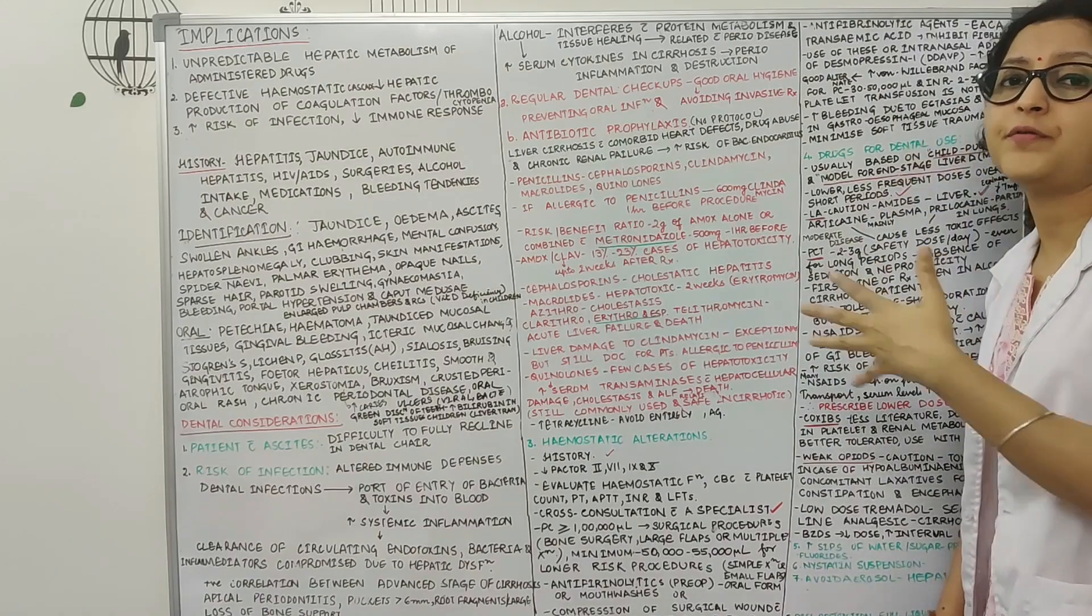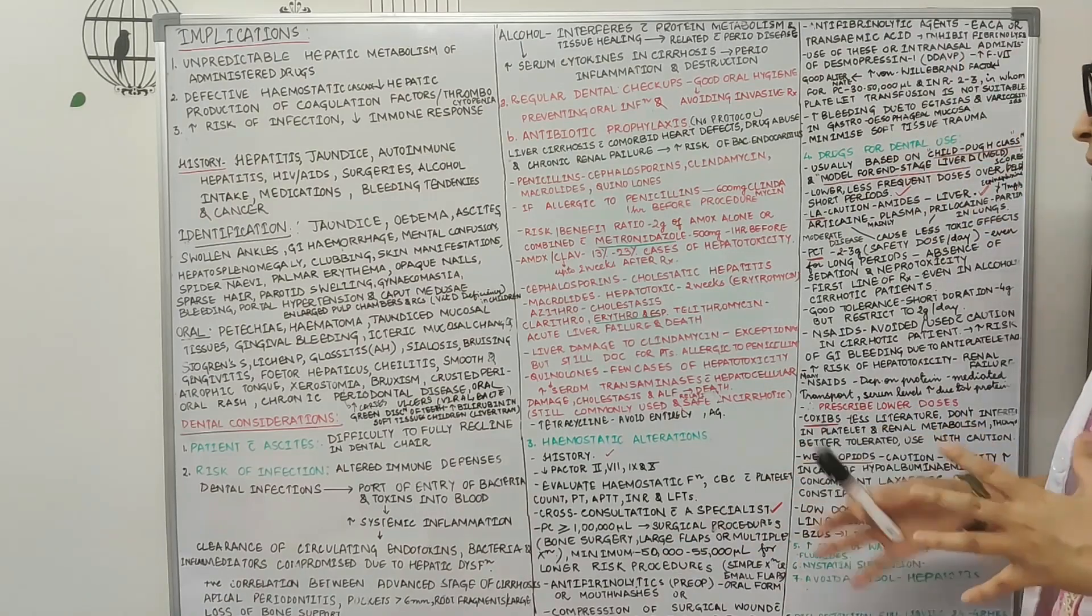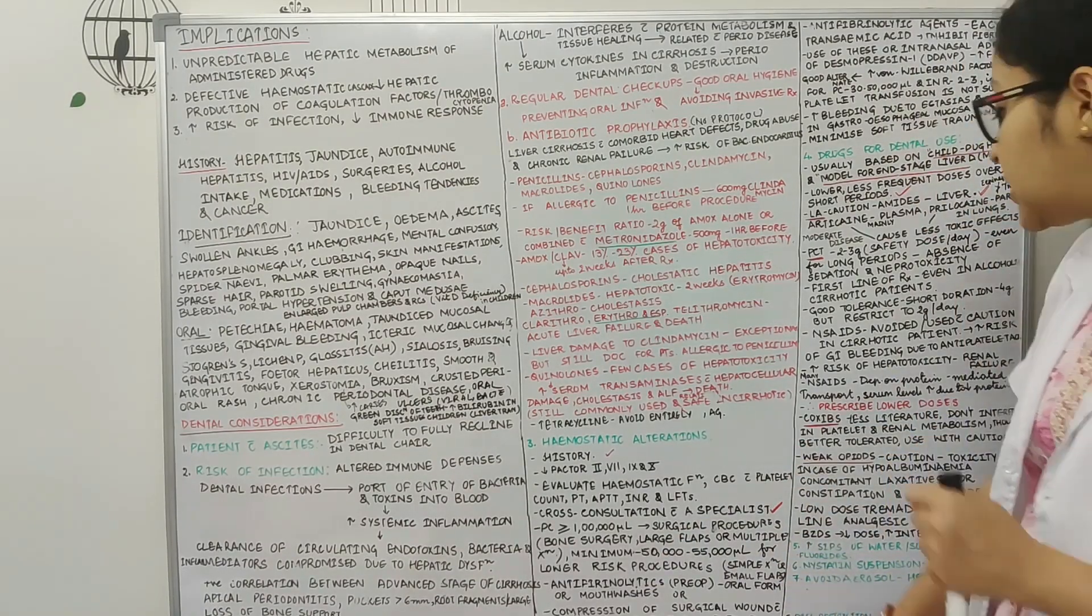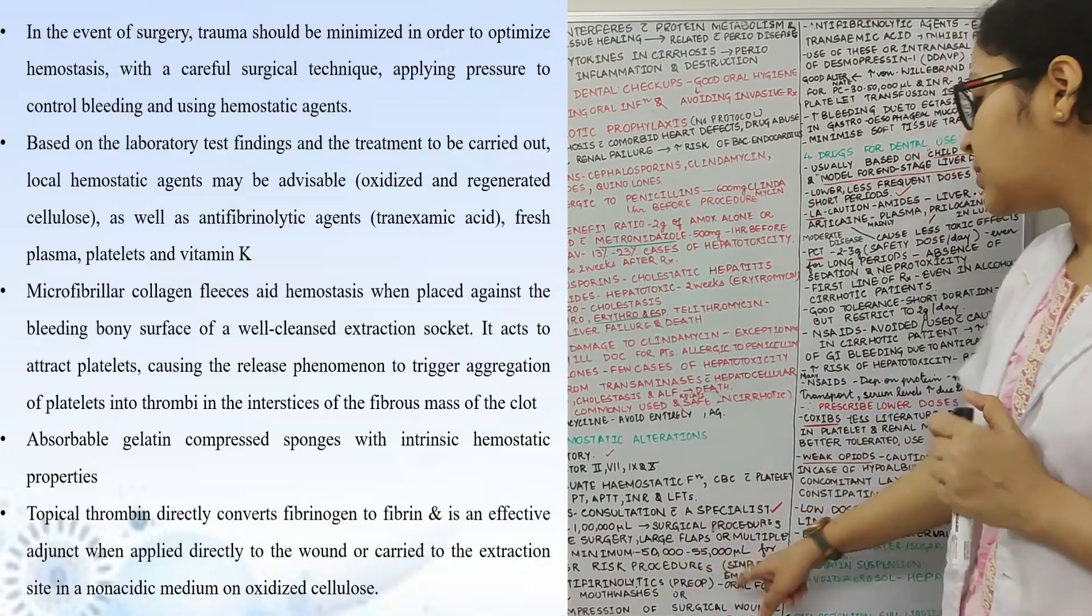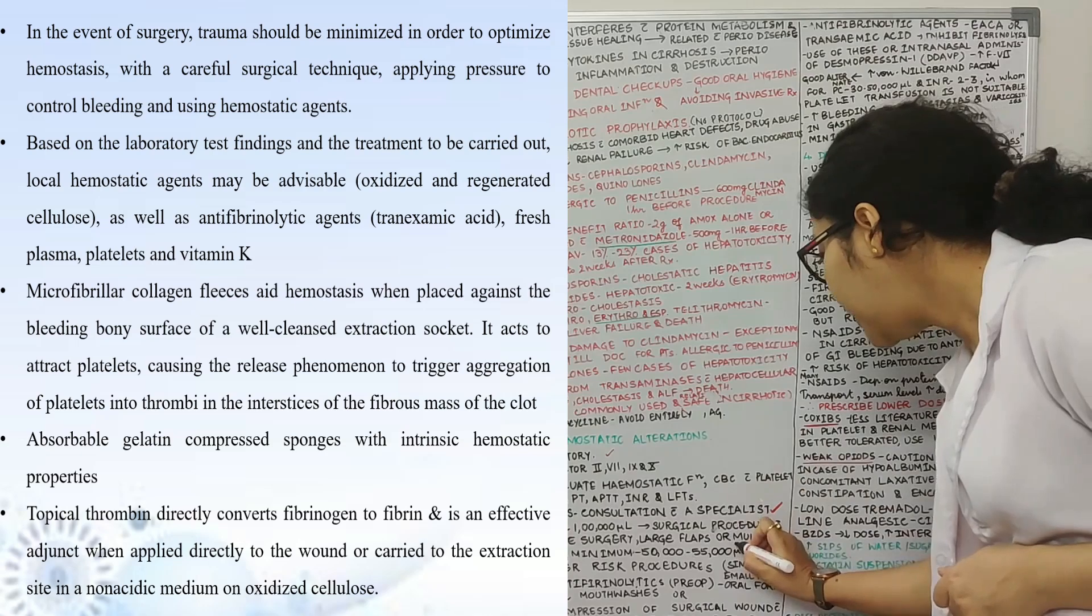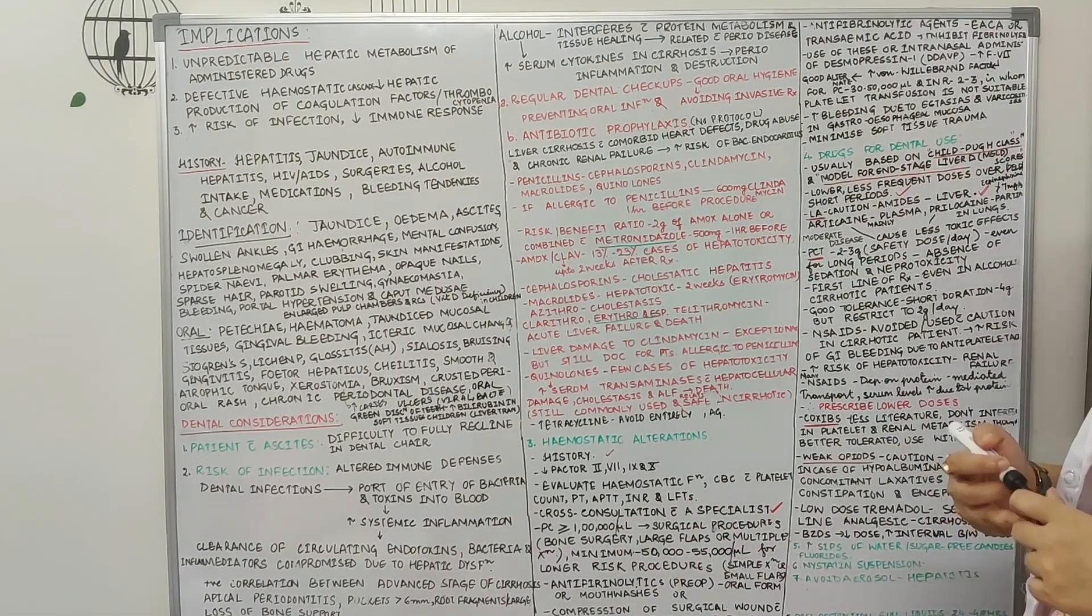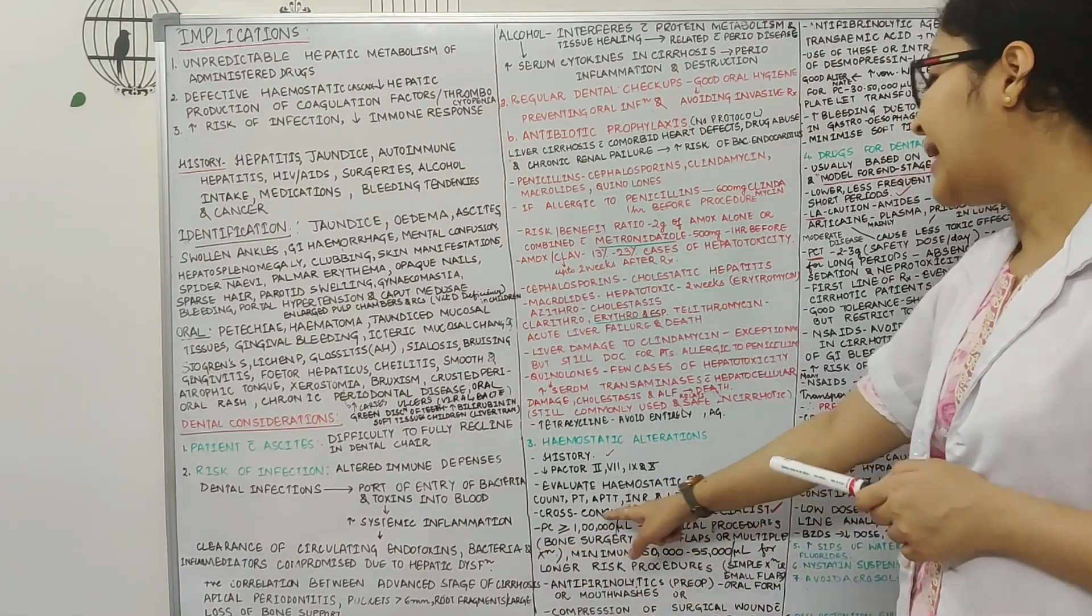So for any kind of minor surgeries like extraction, simple extraction or small flap procedures, the platelet count should be minimum between 50,000 to 55,000 per microliter. And similarly for any kind of major surgical large flaps or multiple extractions in bone surgery, it has to be greater than or equal to one lakh per microliter.